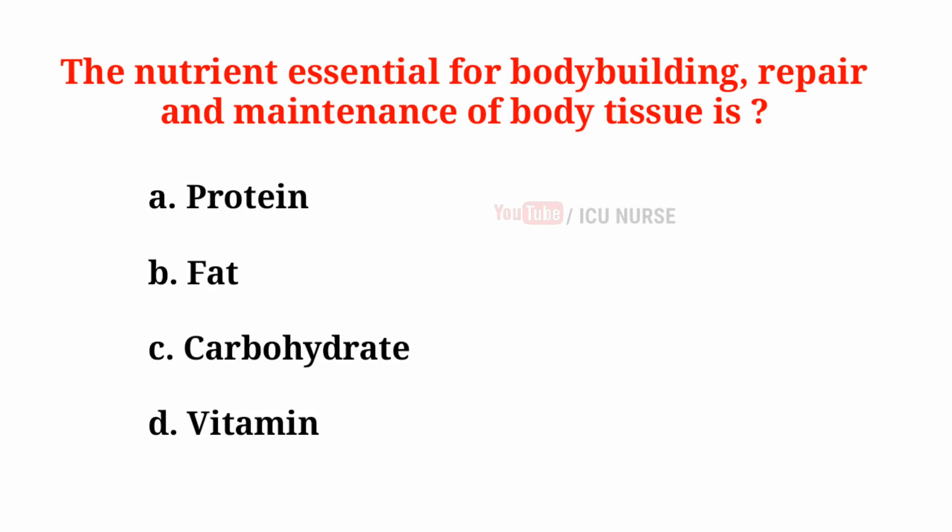The nutrient essential for body building, repair, and maintenance of body tissue is: A. Protein, B. Fat, C. Carbohydrate, D. Vitamin. And the correct answer is A. Protein.